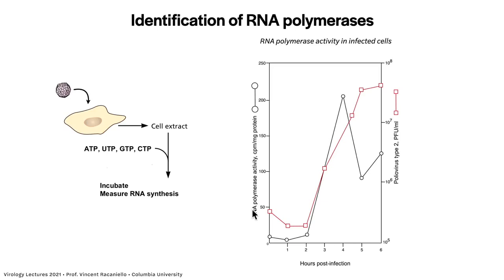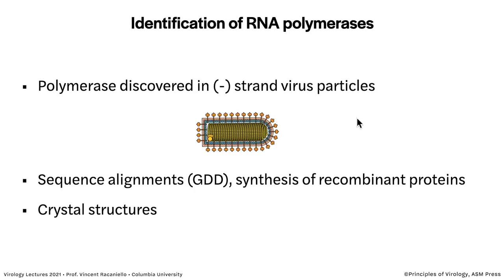Looking at hours after infection on the x-axis, RNA polymerase activity on the left, and virus titer in PFU per ml on the right — this is an experiment with poliovirus. You can see RNA being made, and at the same time virus is being made as well. That was the first evidence of activity in cells that can make RNA. In uninfected cells, you see nothing — there's no incorporation into RNA because cells don't make RNA from RNA.